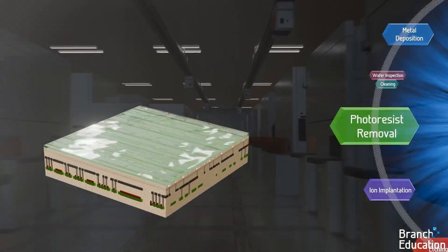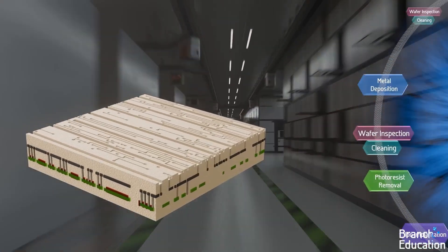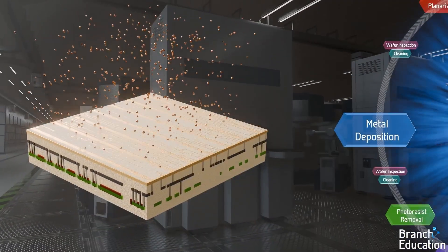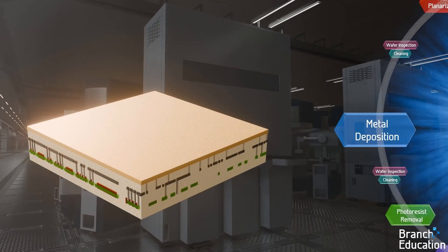Next, the wafer is sent to a photoresist stripper, where the mask layer is removed. The wafer then travels to a physical vapor deposition tool, where a sequence of metals fills in the exposed pattern and coats the wafer in metal.